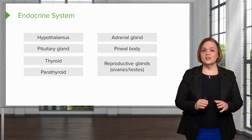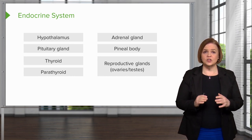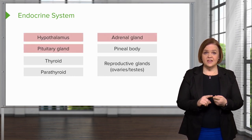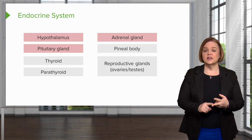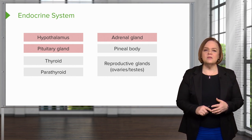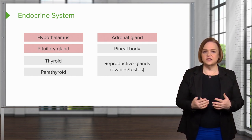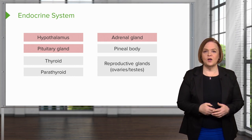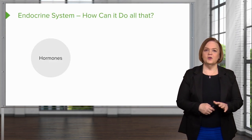We're going to focus on these three: the hypothalamus, the pituitary gland, and the adrenal gland. So when we're talking about corticosteroids, these are the three glands that are involved.